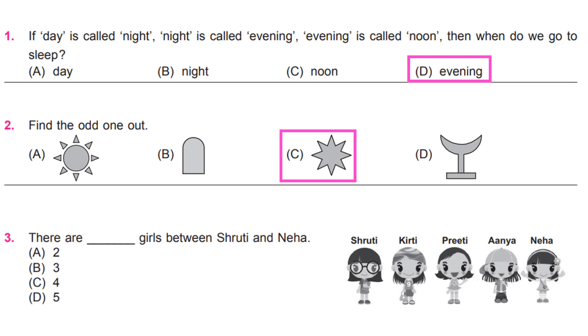There are dash girls between Shruti and Neha. Let us count it after Shruti. 1, 2, 3. So the answer is B. 3.